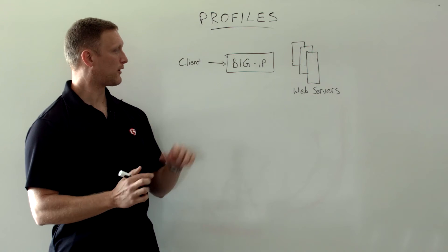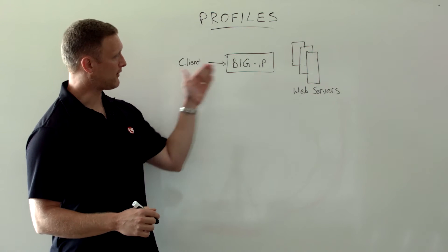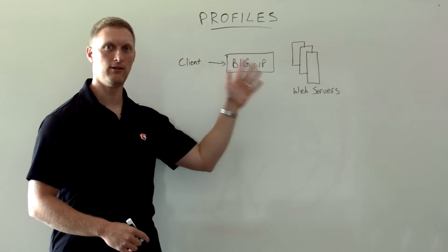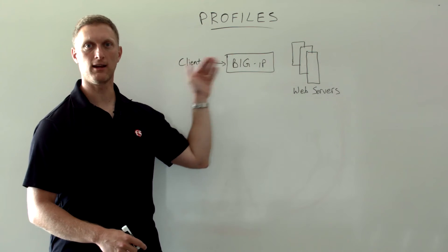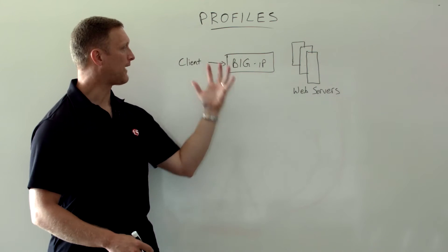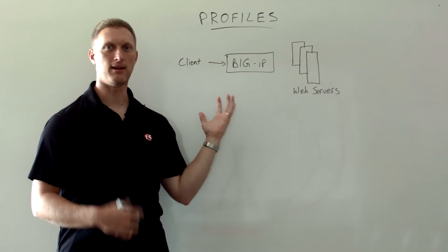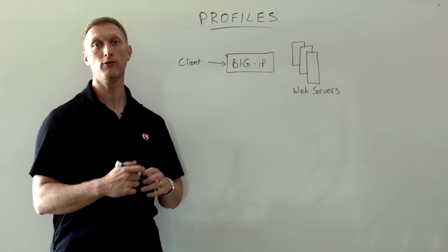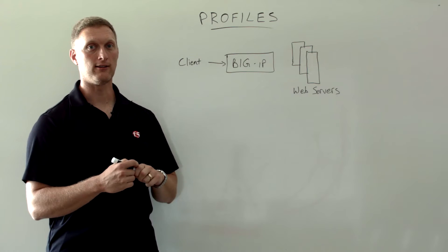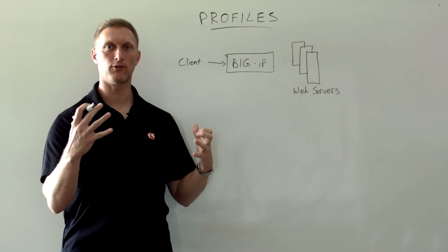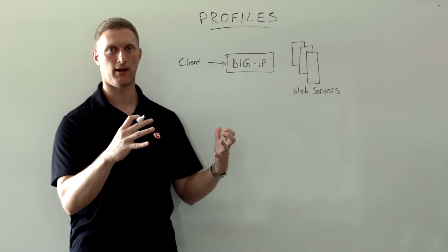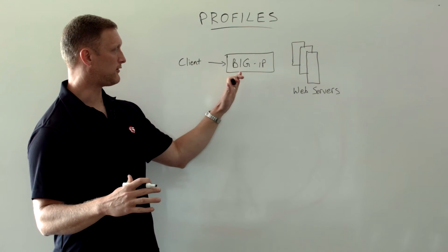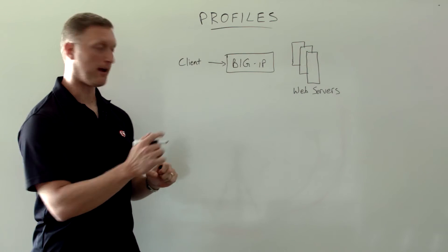So the question is, as all these different services, protocols, authentication, and encryption come through here, how does the BIG-IP handle all that stuff? And the answer is through profiles. I wanted to mention a few different types of profiles that you'll see on the BIG-IP.